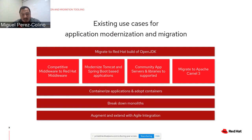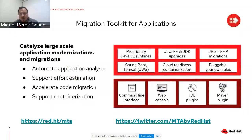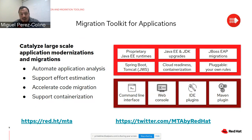We also have rules based on the 12-factor app definition for containerization. If you want to containerize your application and you're using something like a shared session that is not suitable for containers, the toolkit will help you find what issues exist that you should fix before moving your application into a container. Additionally, we support breakdown of monoliths and agile integration. So what is the Migration Toolkit for Applications? First things first: this is fully open source.